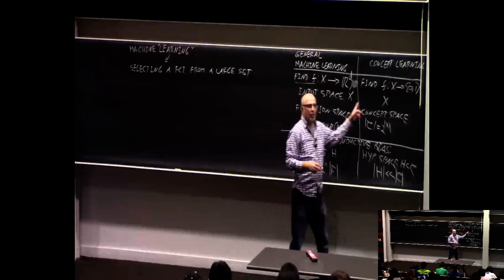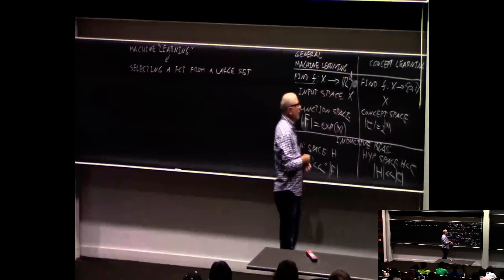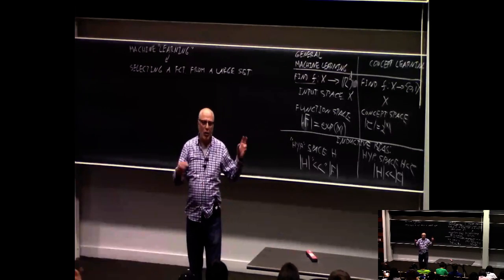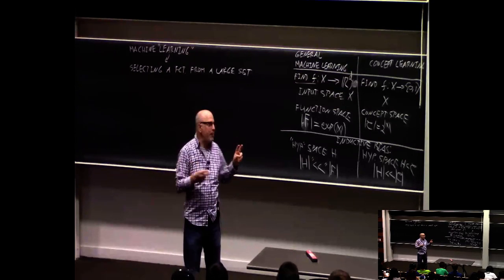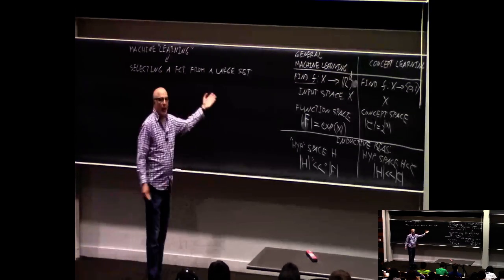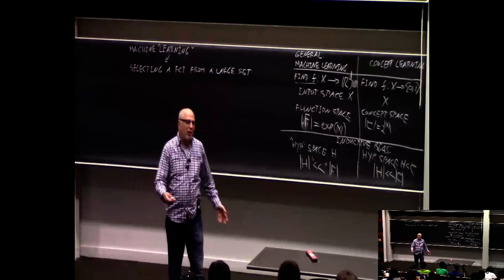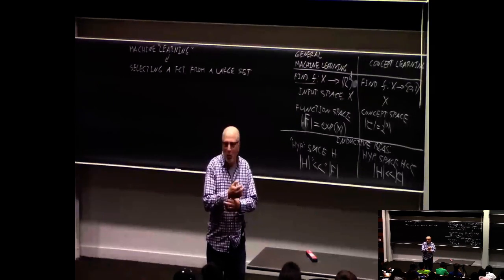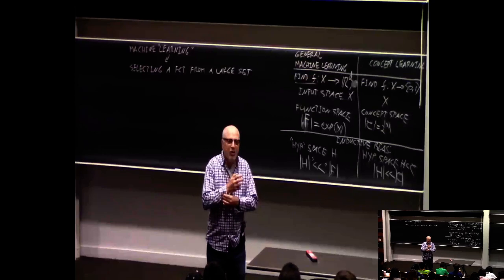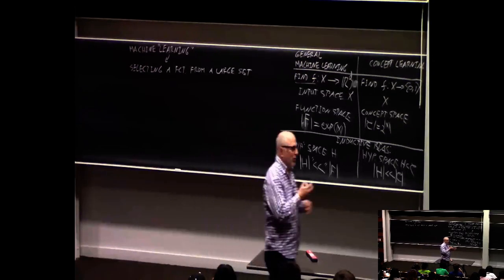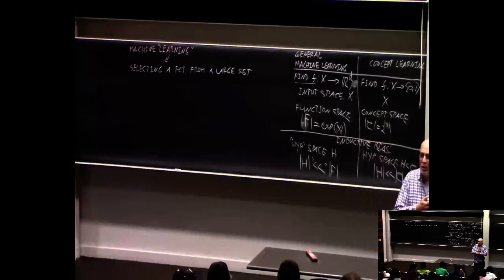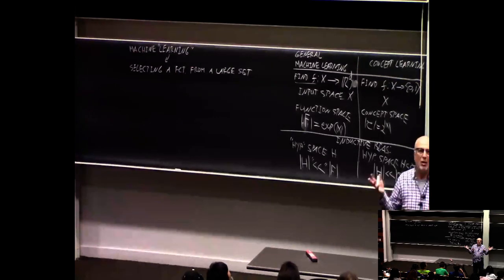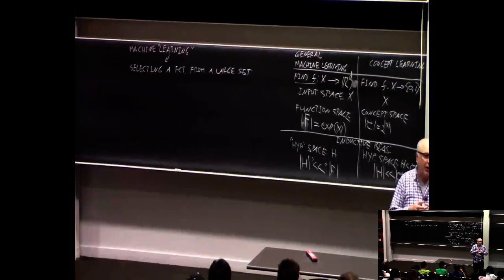In both cases we have an input space which could be extremely large. Learning a function — learning is a very sexy word — but really what we mean is selecting a function from a potentially very large set. If we called it 'machine selection' it wouldn't attract as much attention. Mathematically speaking, it's selecting a function from a potentially extremely large set.